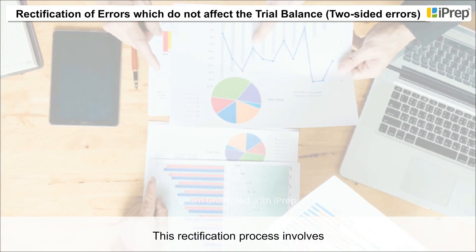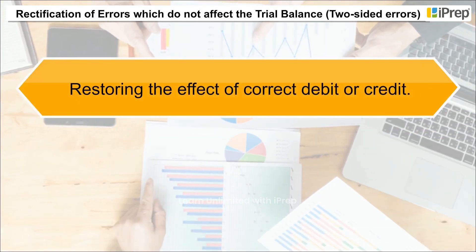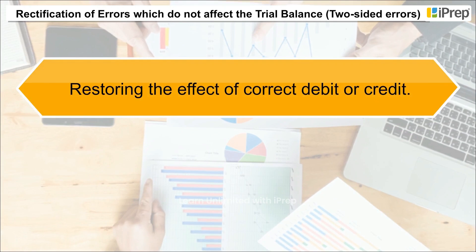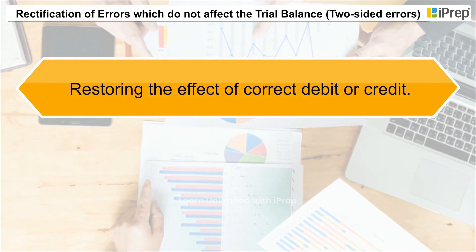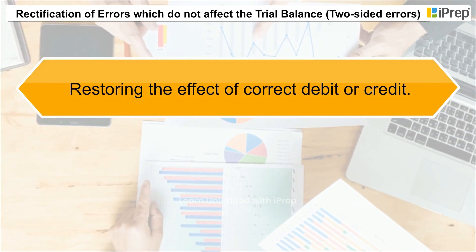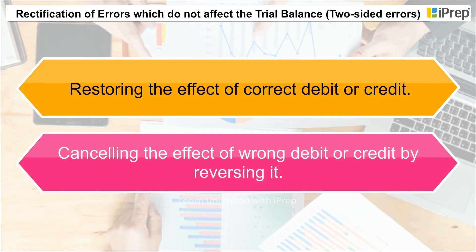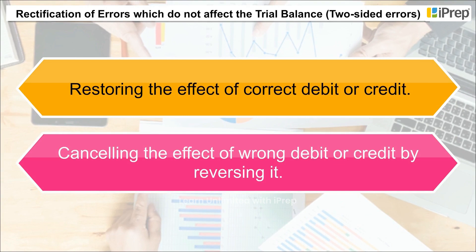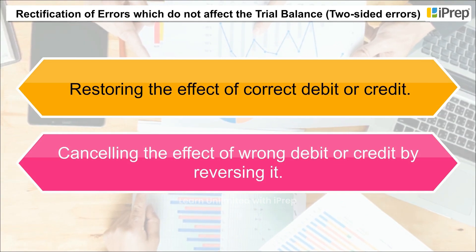This rectification process involves: A. Restoring the effect of the correct debit or credit, and B. Canceling the effect of the wrong debit or credit by reversing it.